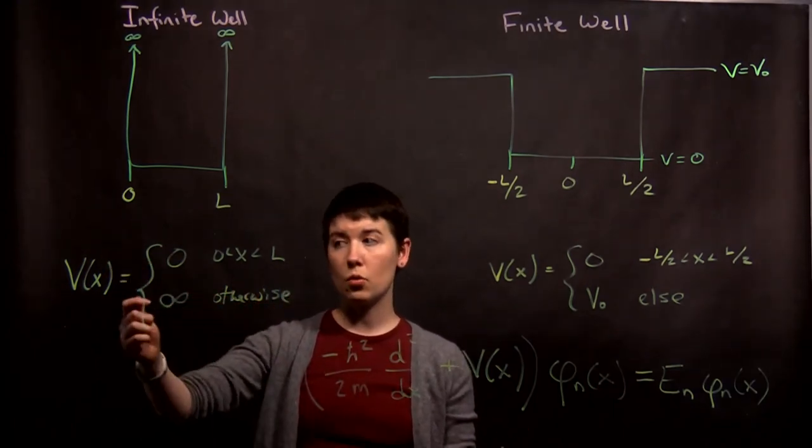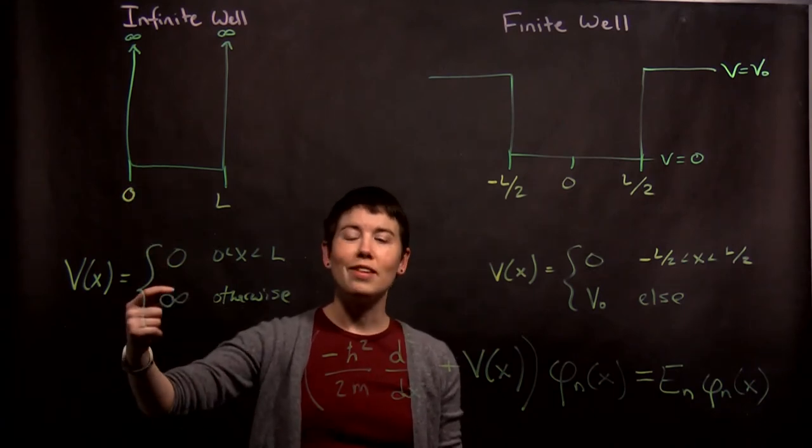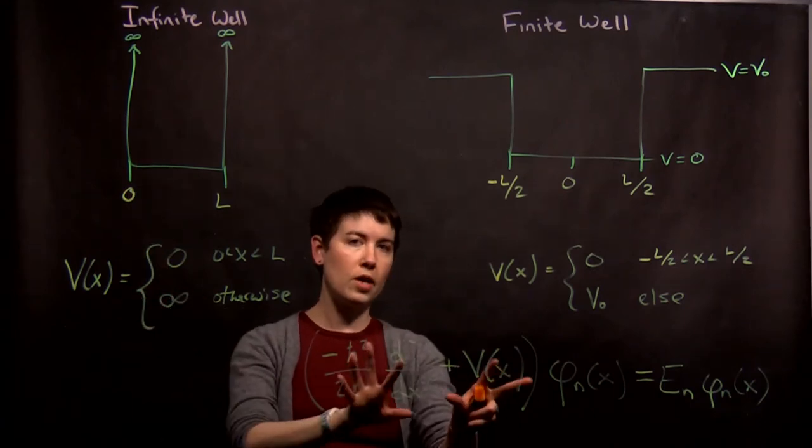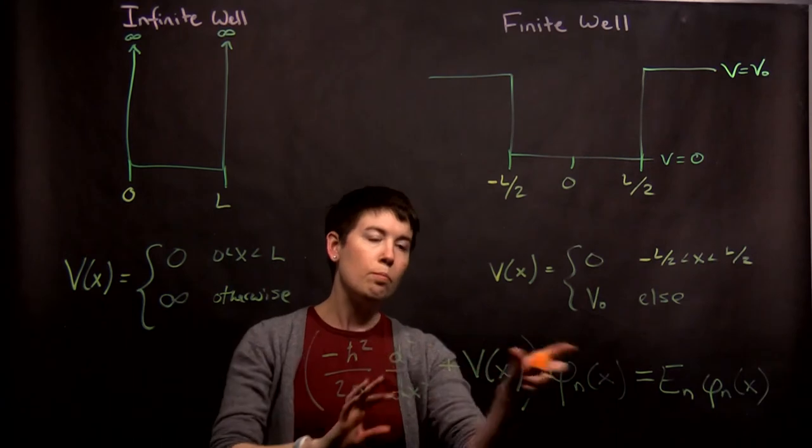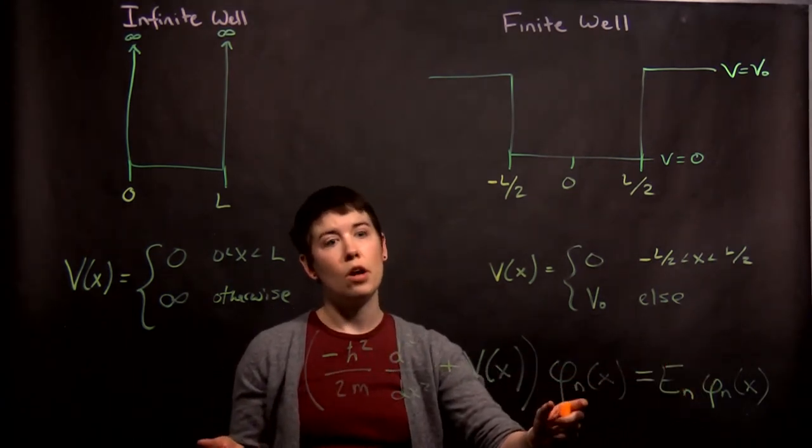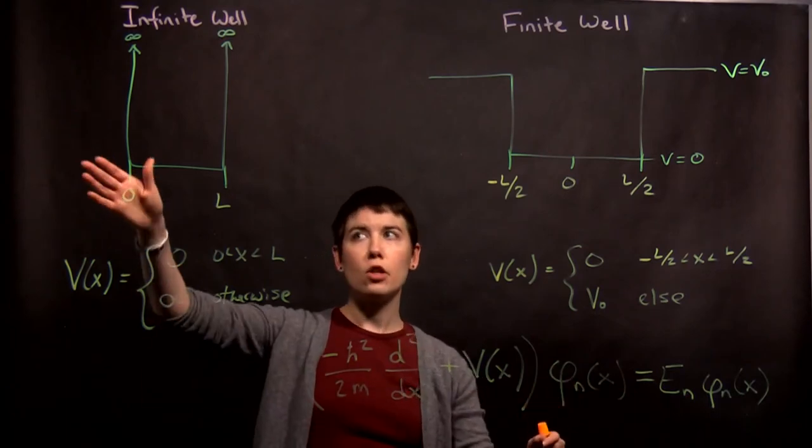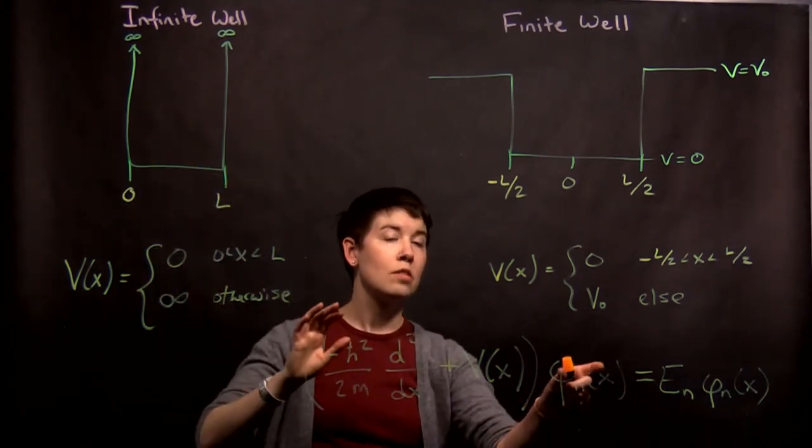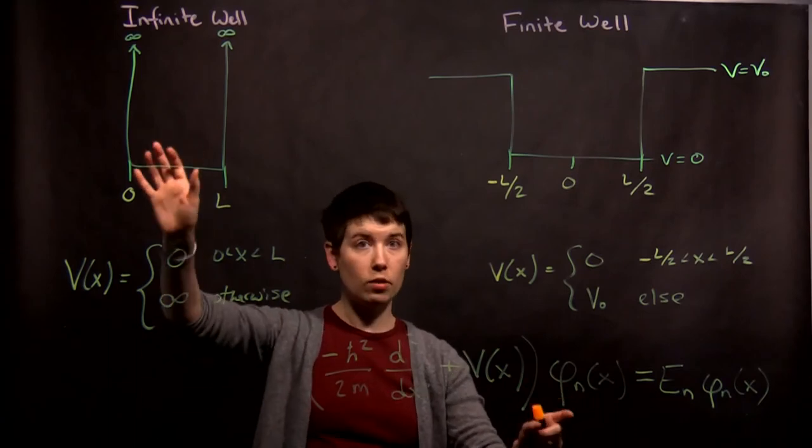Now the key was for the infinite square well, that when it was infinite here, the only way we can have an infinite term multiplied by a thing that equals that thing is if the thing itself is zero. So from this, we said that our wave function was in fact zero if we're outside of the well.